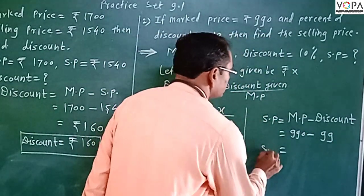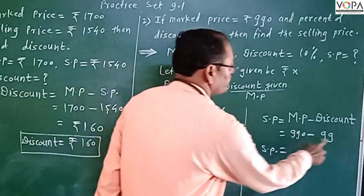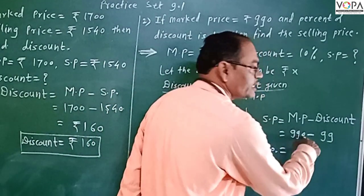So we get X equals ₹99. Discount is ₹99.